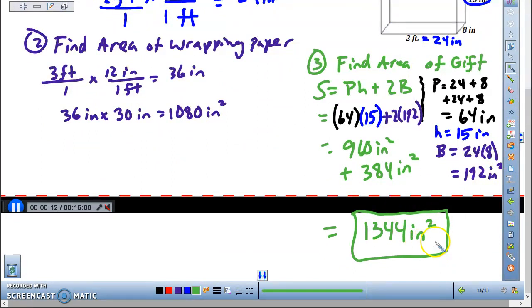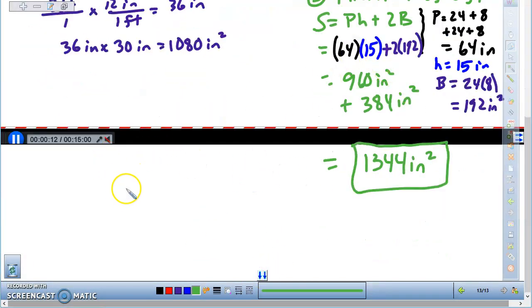So if we take 1,344 square inches and we divide this by the area of our wrapping paper, which was 1,080 square inches, our units cancel and we end up with 1.344. Now that's how many rolls Patrick needs.